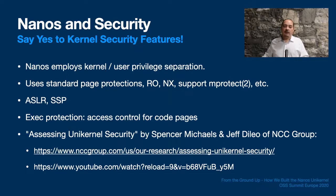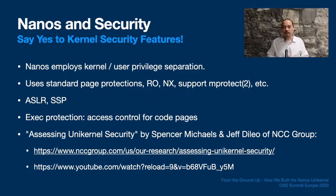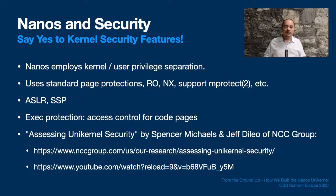We also have an optional hardening feature called exec protection, which will only allow execution of pages mapped from the program binary and files explicitly marked as executable in the file system, like shared libraries — and such files cannot be written to under any circumstances. For programs that do not use JIT or otherwise generate code pages, this can help lock down a Nanos instance by making executable pages immutable should the application be compromised.